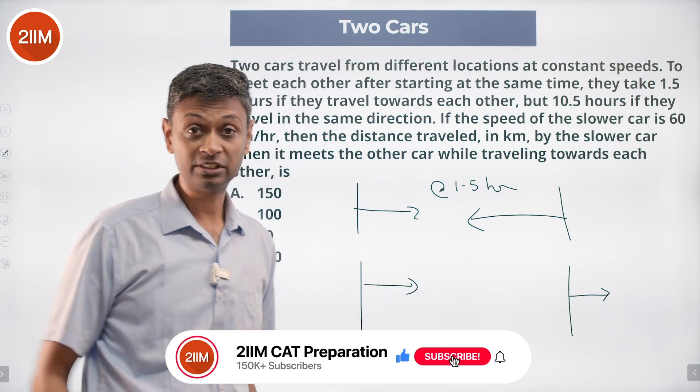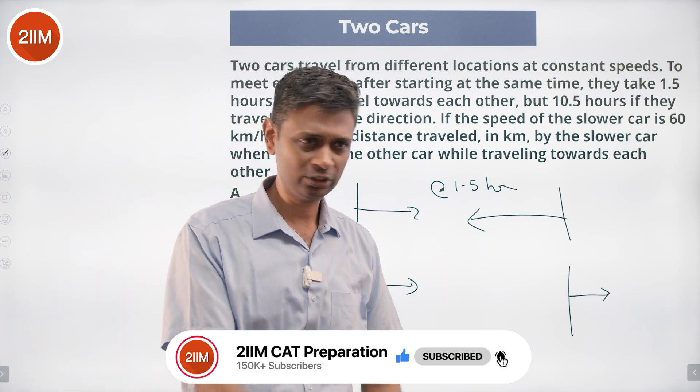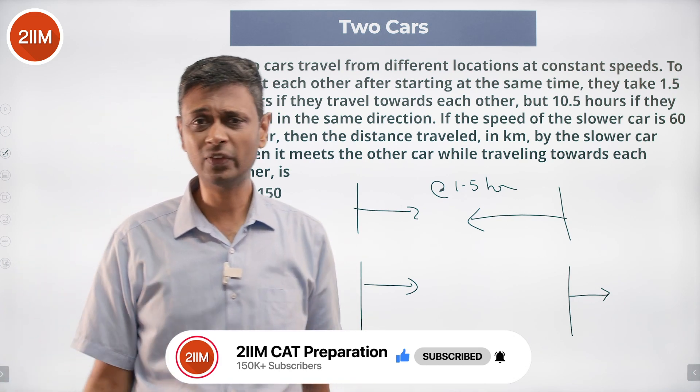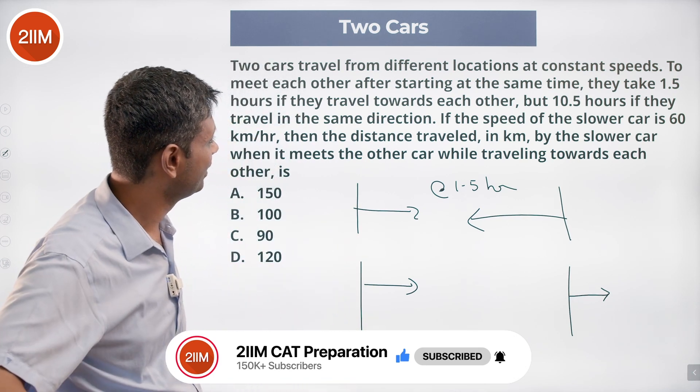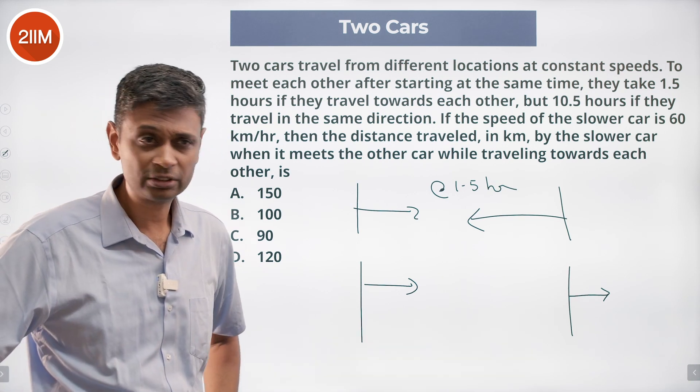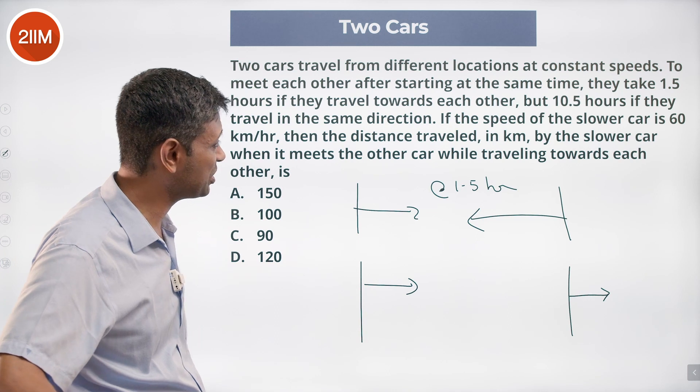They take 10.5 hours - this guy has to catch up with that guy, and so the relative speed... relative speed, substitute that, find their individual speed ratios and all of that. The question says the speed of slower car is 60 kilometers. The distance traveled in kilometers by the slower car when it meets the other car...